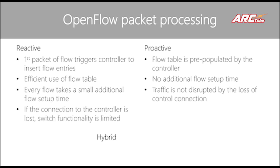Traffic is not disrupted by loss of control connection because you don't depend on the controller — it may help populate the tables initially, but after that you don't need its support. It essentially requires aggregated wildcard rules, because there are so many tuple fields in OpenFlow — five, six, or maybe twelve — so you can't match everything practically. For example, if every traffic is going to a particular destination, you only need to match the destination IP and define the action, and put that one entry in the flow table.